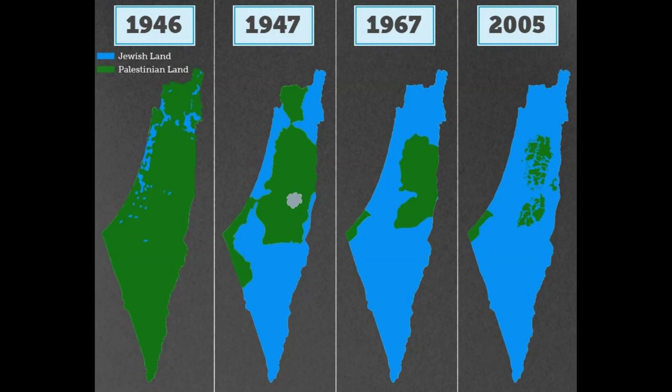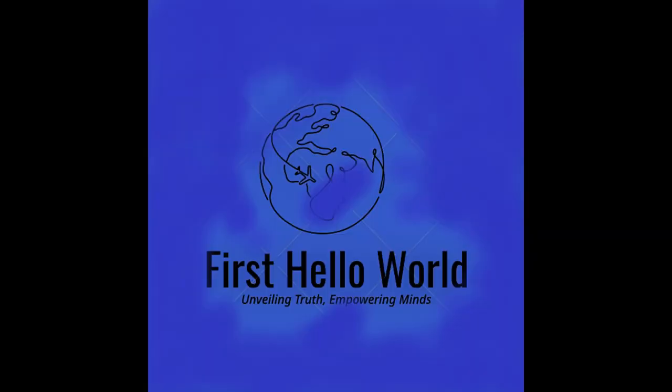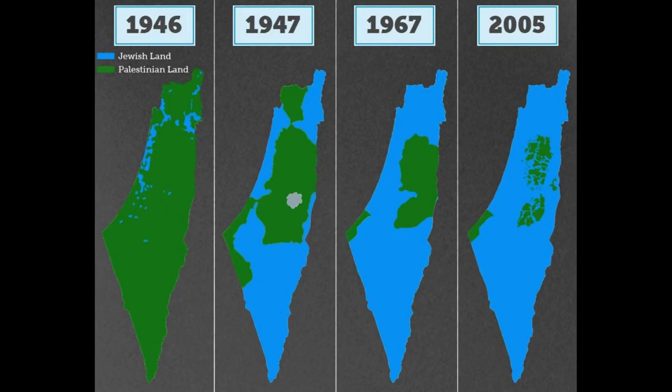In May 1948, the British mandate over Palestine expired and the State of Israel was declared. The surrounding Arab states invaded Israel, but the Israelis were victorious. The war resulted in the displacement of hundreds of thousands of Palestinians, who became refugees in neighboring countries.